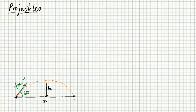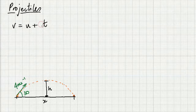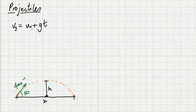Let's use our simplest equation of motion first of all — that's V equals U plus AT. We know A is actually G, gravitational acceleration. We need to work out V and U in the Y dimension, so I'm just going to put a little subscript Y there. V in the Y dimension is V at the top of the flight, so I know that's zero.